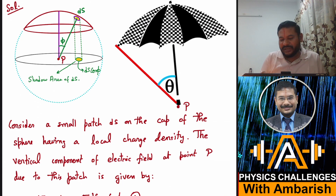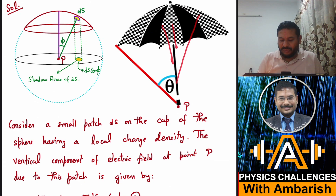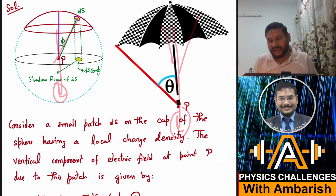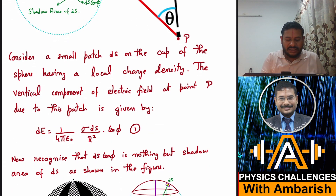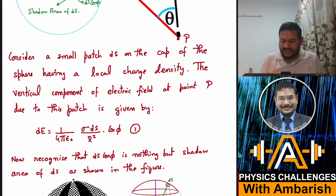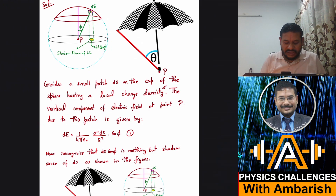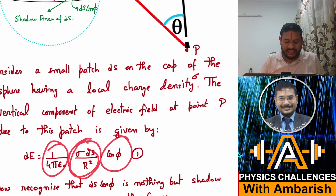The field at point P due to this patch is simply (1/4πε₀) × (σ·ds / r²). By symmetry, with black patches everywhere in a symmetric geometry, there's no preference for the field being left, right, or horizontal — by symmetry the field must be vertically downward. So I need to take the downward component of this field. The vertical component is dE = (1/4πε₀) × (σ·ds / r²) × cos φ.